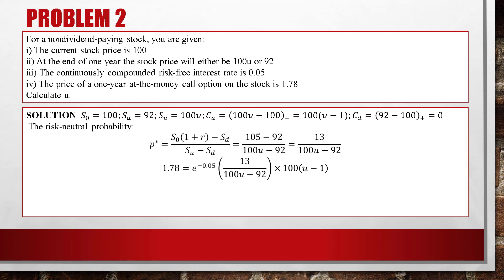Using the risk-neutral pricing formula for the call option, we get 1.78 = e^(−0.05) × [13/(100u − 92)] × (100u − 1). Here 13/(100u − 92) is the risk-neutral probability P*, and (100u − 1) is CU. Since CD = 0, we don't need to include that term.